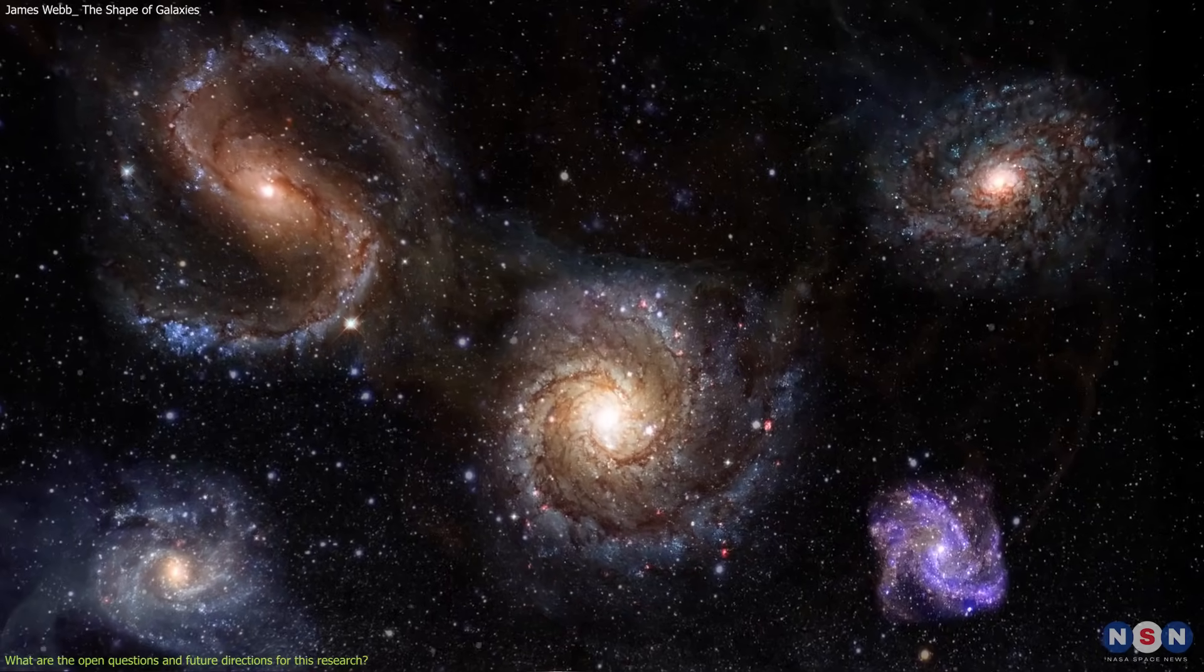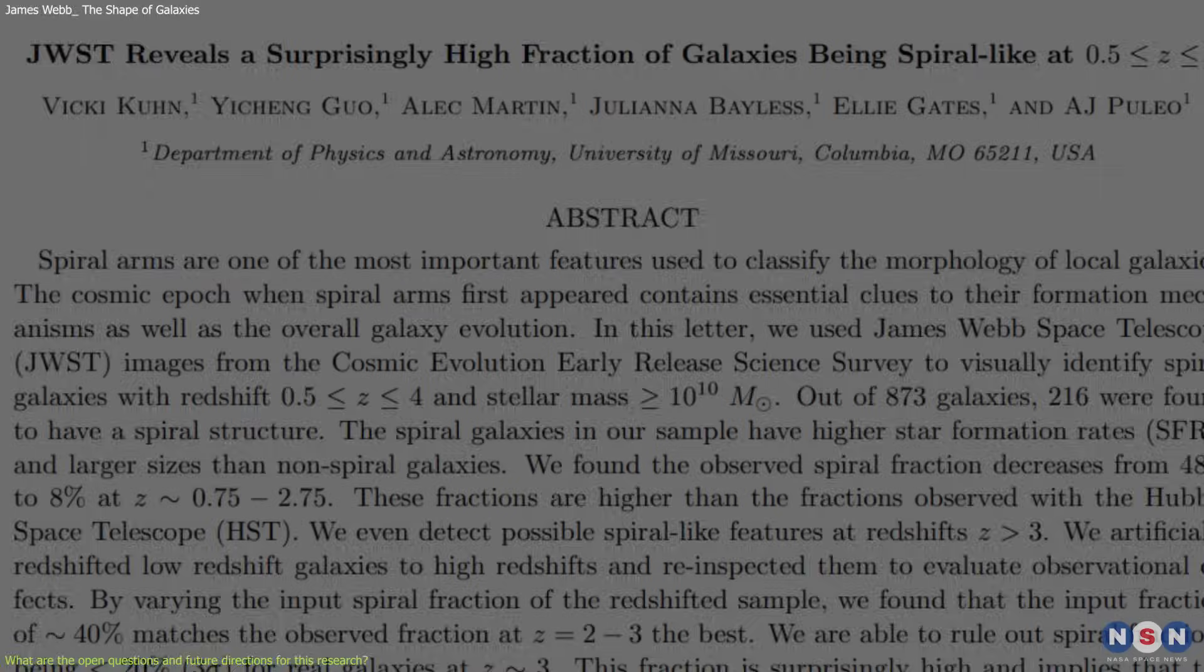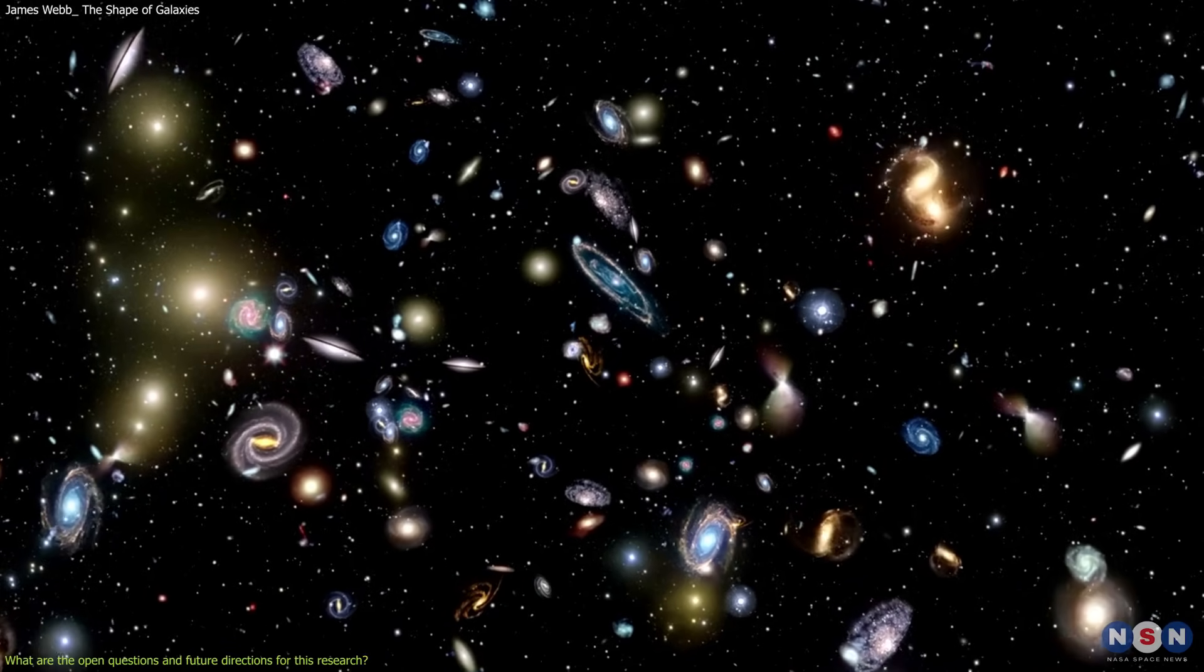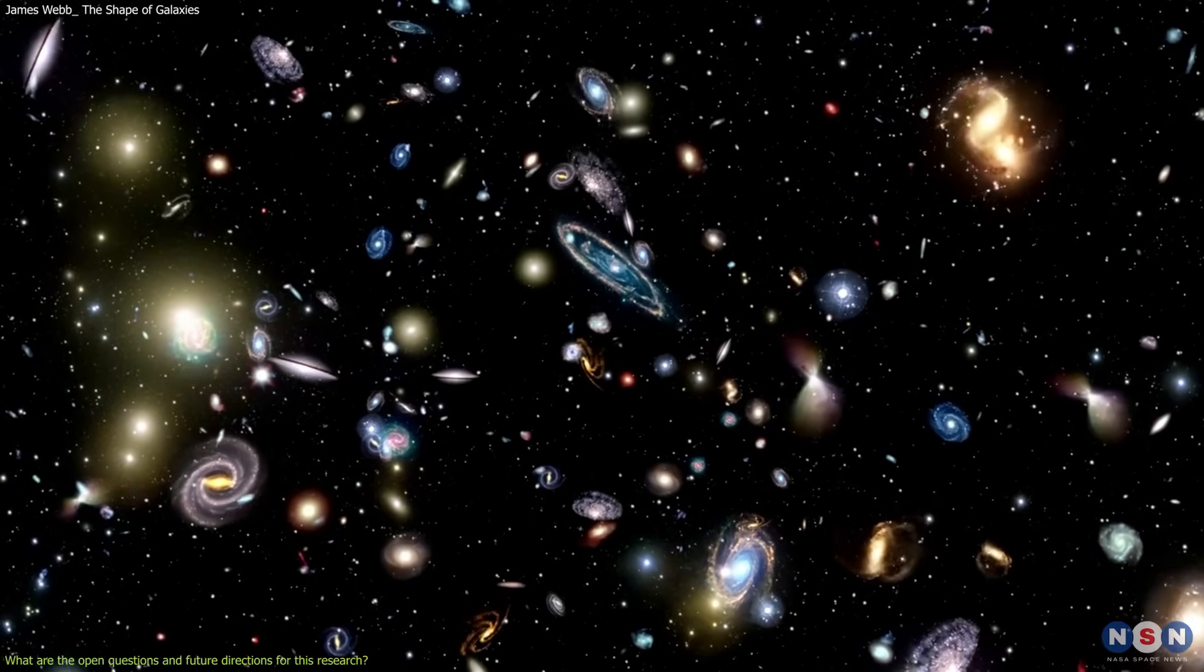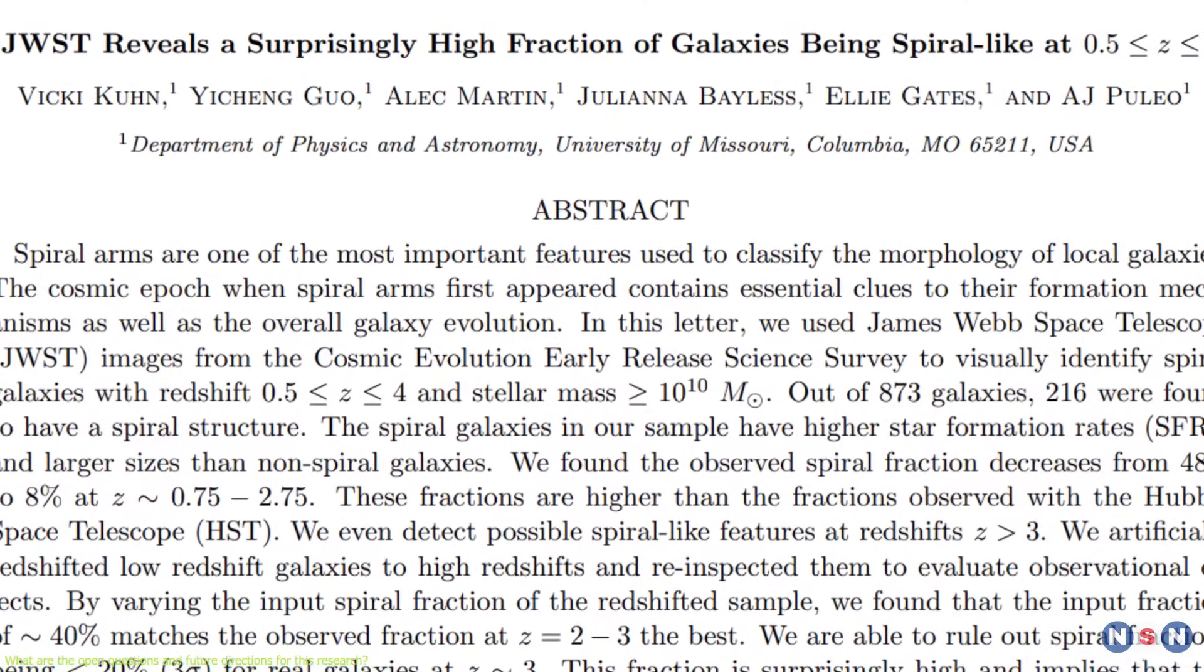The visual classification. It used a technique called visual classification, which means that the authors of the paper looked at the images and categorized the galaxies based on their shape and structure. This technique is subjective and depends on the judgment and experience of the classifiers.